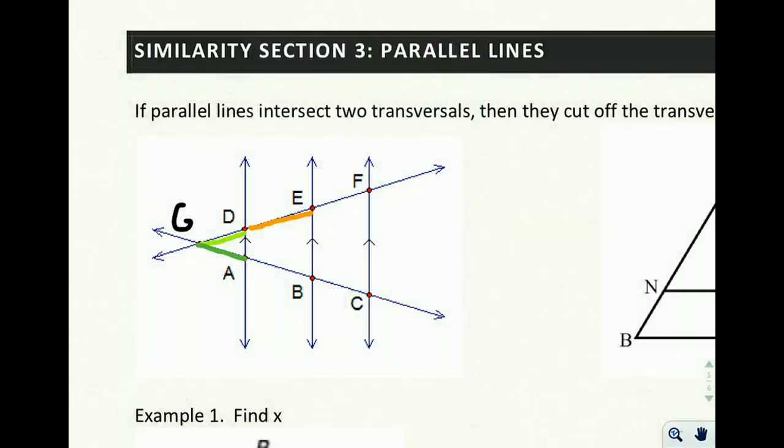those two segments are going to have a relationship with each other that is proportional to the relationship between DE and AB. So for example, if we were to write out GD, that's this first piece, over GA, so top over bottom, is going to be proportional to, so top divided by bottom is the same ratio as this top divided by this bottom,